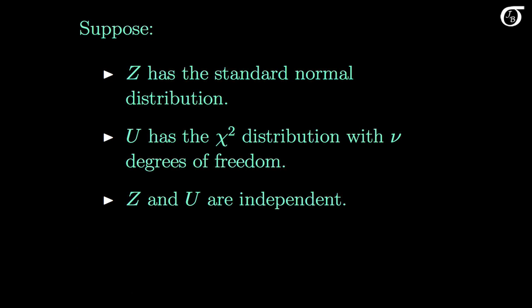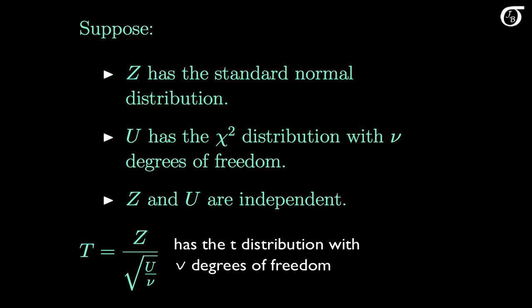Then if we take the standard normal random variable Z and divide by the square root of the chi-square random variable U divided by its degrees of freedom, we end up with a random variable that has the t-distribution with ν degrees of freedom. So we often represent this random variable with the capital letter T.